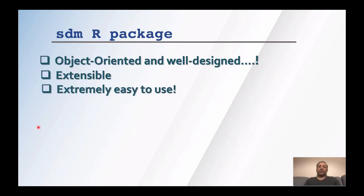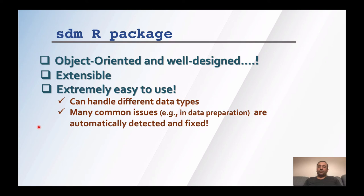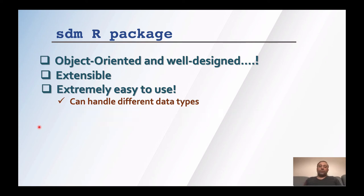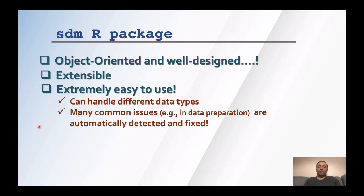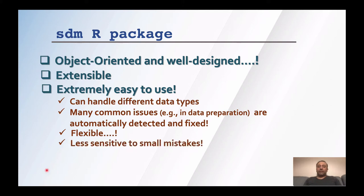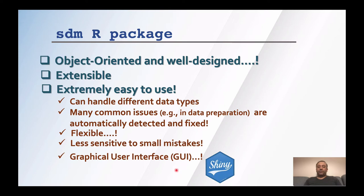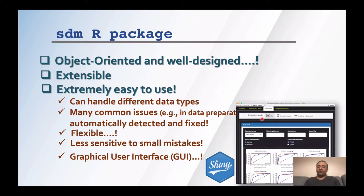Another key feature of the package is that it is extremely easy to use. It can handle different data types like spatial data or data frames — both can be handled. It can handle common issues in the data: if you have missing data or duplications, they are automatically detected and fixed. It is flexible and less sensitive to small mistakes; if you have typos in some arguments, they are usually handled and the functions are smart enough to understand what you mean. It is also followed by a graphical user interface powered by Shiny to interactively explore results.